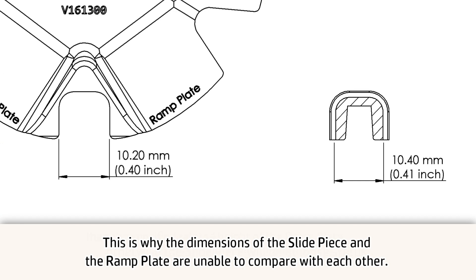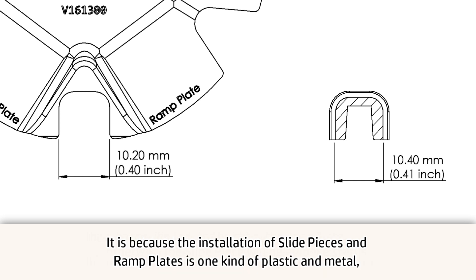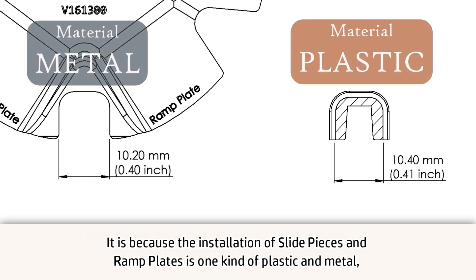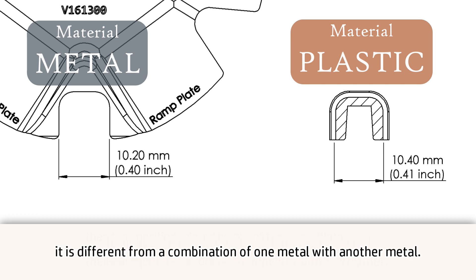This is why the dimensions of the slide piece and the ramp plate are unable to be directly compared with each other. It is because the installation of slide pieces and ramp plates is a combination of plastic and metal, which is different from a combination of one metal with another metal.